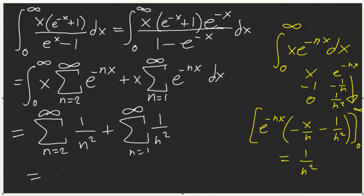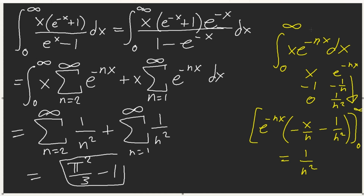So then our integral equals two different sums: the sum from n=2 of 1/n², plus the sum from n=1 of 1/n². See how fast that is — super fast.